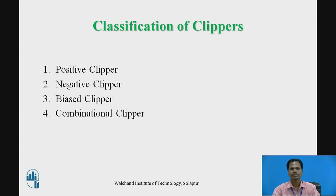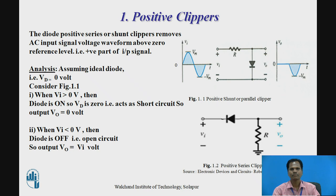Clipper circuits are basically categorized as positive clipper, negative clipper, biased clipper, and combinational clipper. A diode positive clipper circuit, either series or shunt, removes the input AC voltage signal waveform above the zero reference level — that is the positive part of the input signal. Figure 1.1 is a positive shunt or parallel clipper, in which the diode is connected in parallel with input and output. Figure 1.2 is a positive series clipper, in which the diode is connected in series with the input signal source.